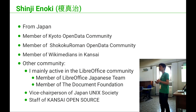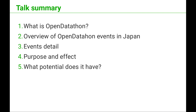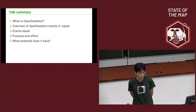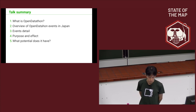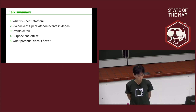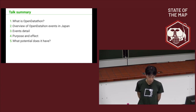As a contributor, I mainly work on the liberal arts committee, and many, many people join the committee. This talk summary has five topics: one, what is open data? Two, overview of open datathon events in Japan. Three, event details. Four, purpose and effect. And five, what potential does it have?